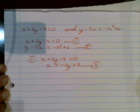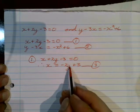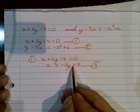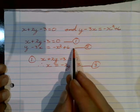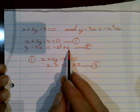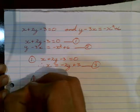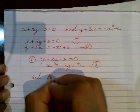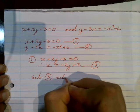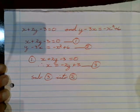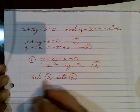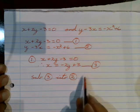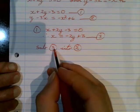That gives us a value for x on its own: x equals minus 2y plus 3, and we're going to call that equation number three. To find our values for x and y, we need to take this new value for x and substitute it back into our more complicated equation, which is equation number two — the one we haven't used yet. So we're going to substitute equation number three into equation number two.